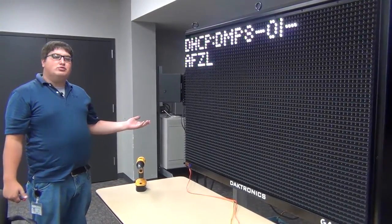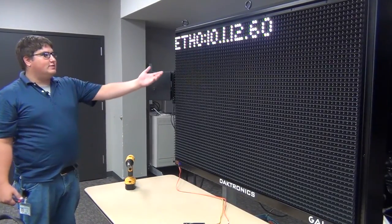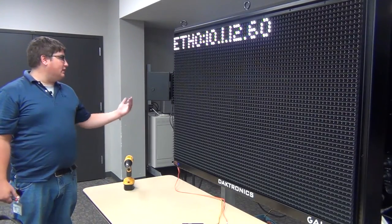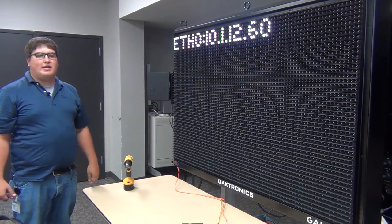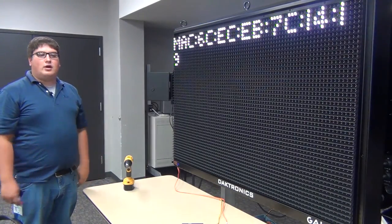As we can see, the sign is now going through its boot sequence. In a second, we should see an IP address on the display of 10.1.12.60. That shows that the display is connected to the network, it has pulled an IP address from the network, and we should be able to communicate using the Venus Control Suite software on our computer.